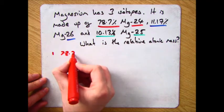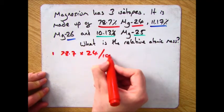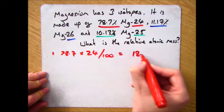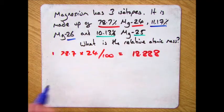So then start off one isotope at a time. So we've got 78.7 times by 24 all divided by 100 which gave me 18.8 recurring.